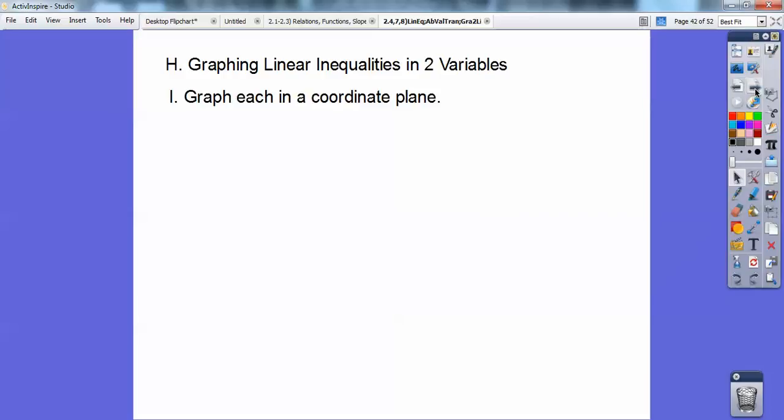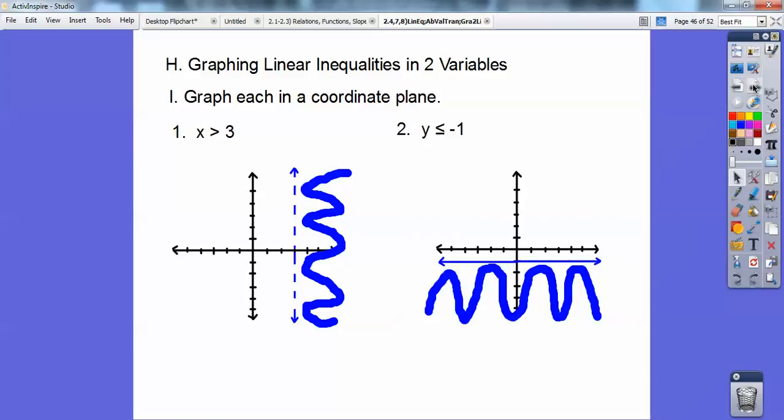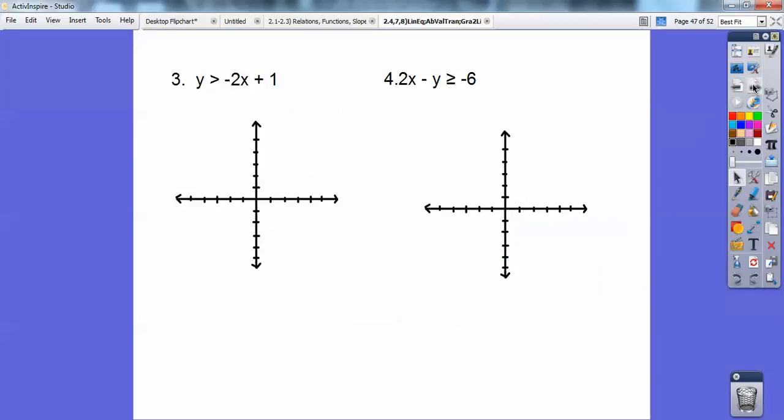Graphing linear inequalities in two variables. Graph each in a coordinate plane, an xy chart. x is greater than 3. That's a dotted line. Greater than means shaded to the right. This is Algebra 1, so I can go kind of fast. y less than or equal to -1. That's a horizontal line. Less than is below.